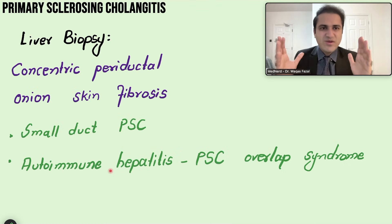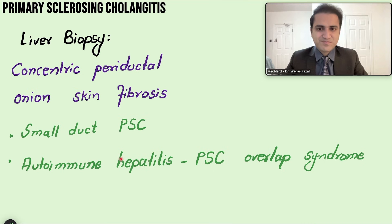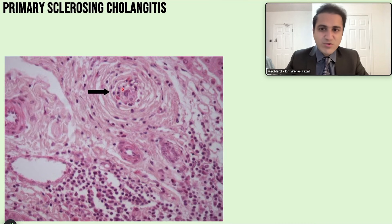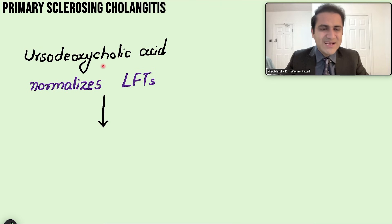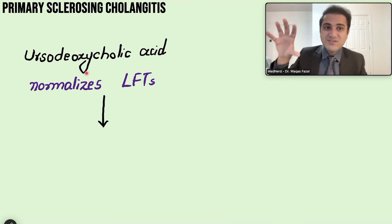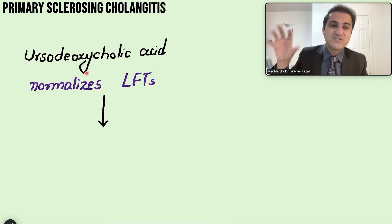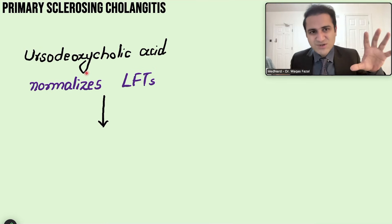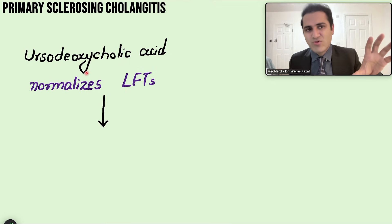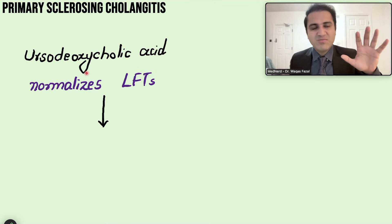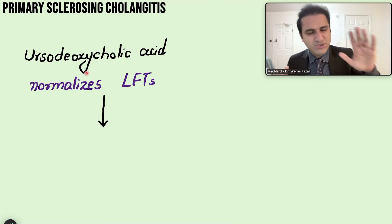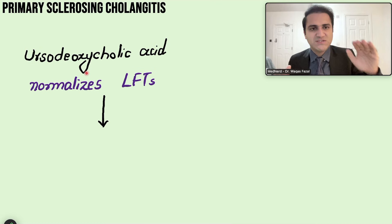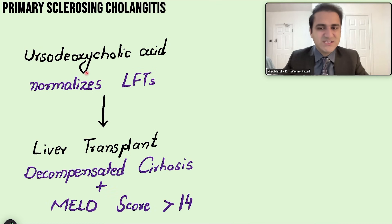This is a histological picture showing onion-skin fibrosis in a PSC patient. Regarding treatment: ursodeoxycholic acid can be used, but unlike in primary biliary cirrhosis where it is first-line and effective, in PSC it has a limited role. It may normalize LFTs slightly but does not slow progression to cirrhosis.